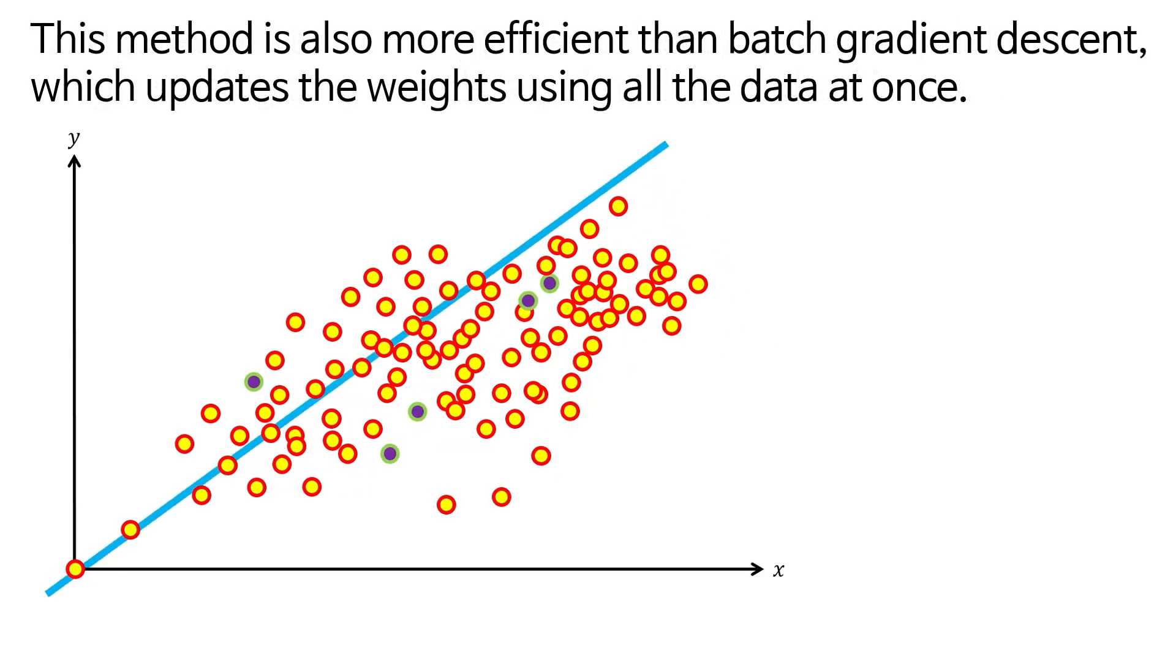This method is also more efficient than batch gradient descent, which updates the weights using all the data at once.